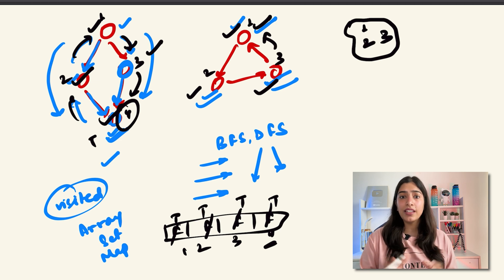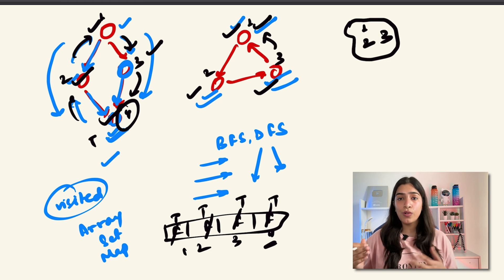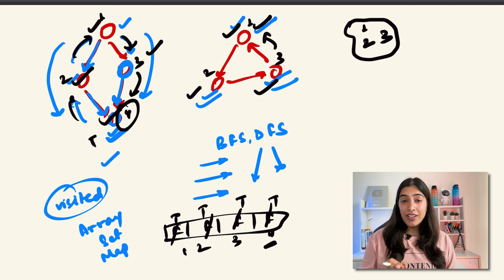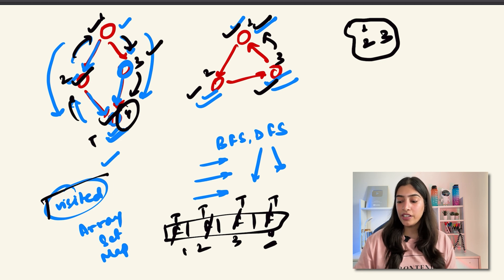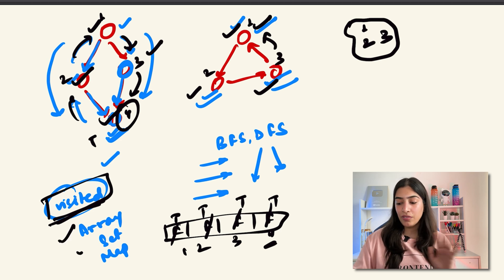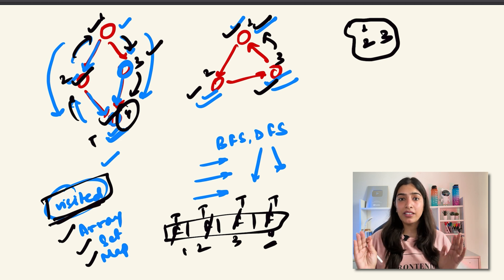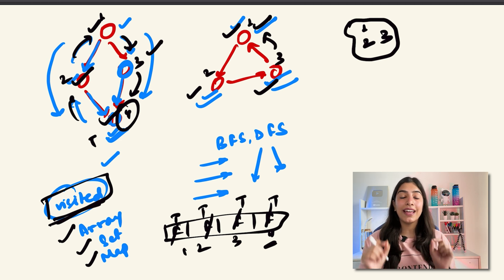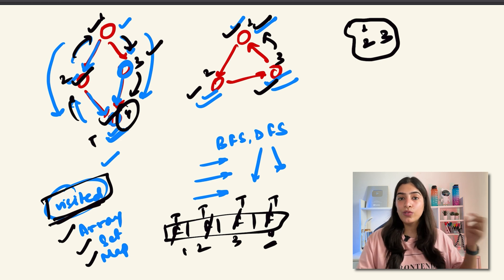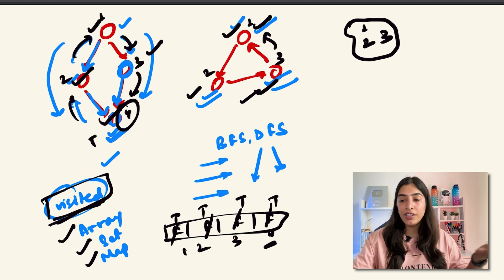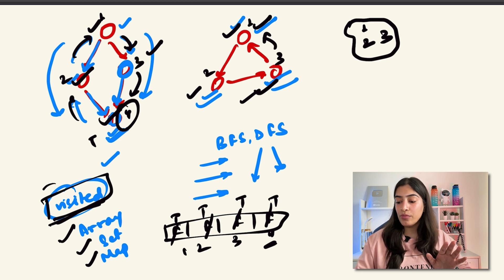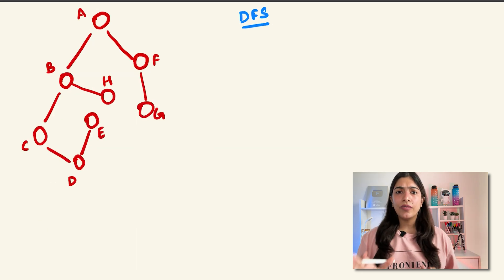You could also use a set - initially empty, and as you visit nodes you add them to the set. When you come back to a node already in the set, you don't visit it again. This is a very logical thing to do. Every time you run BFS or DFS in a graph, you must mark nodes as visited - whether using an array, set, or map. The main point is: don't keep visiting the same nodes again and again. Visit every node exactly once in a systematic manner.